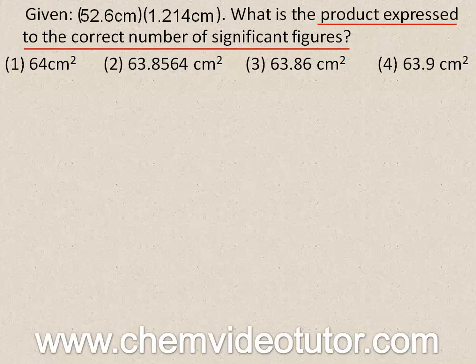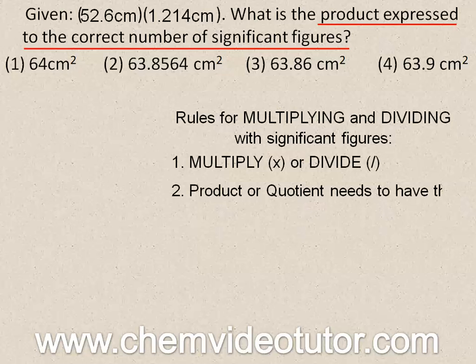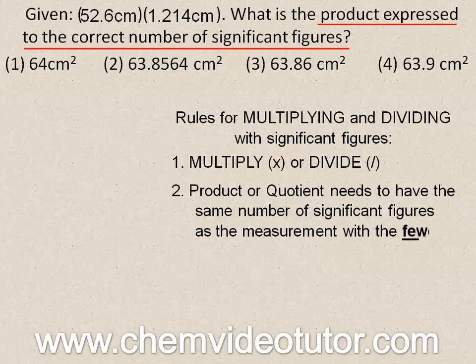Believe it or not, the rules for multiplying and dividing with significant figures are more basic than for adding and subtracting because you don't need to line up the decimals. Simply multiply or divide and know that the product or quotient needs to have the same number of significant figures as the measurement with the fewest number of significant figures.